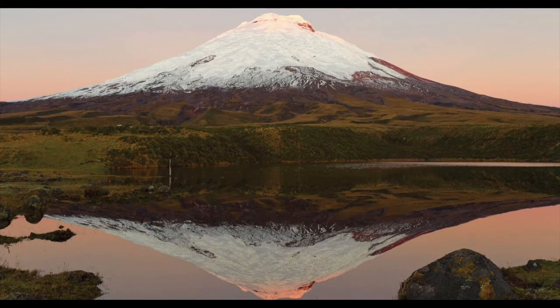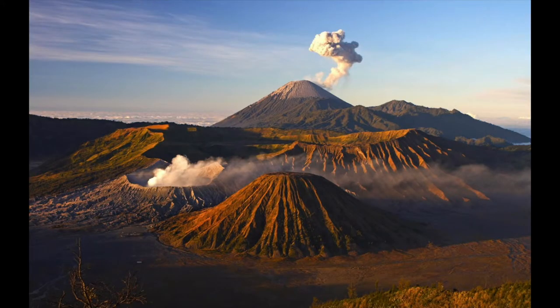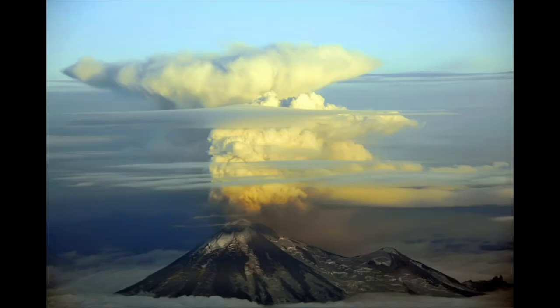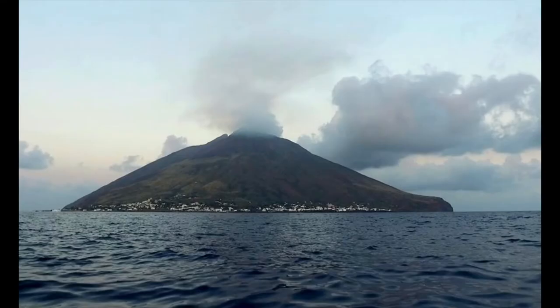A volcano is a mountain that is formed over cracks in the Earth's crust from which lava, ash, gas, and fire erupts. Erupts is when it sends out the lava and the ash and the gas in a sudden explosion. Remember, heat, pressure, and time causes changes in the Earth.